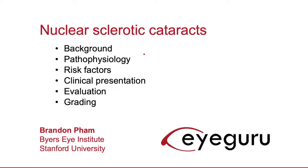In this video we will discuss the most common type of cataract, which is the nuclear sclerotic cataract, sometimes abbreviated as NSC. We'll begin with background information, discuss how they're formed, talk about risk factors, and then conclude with the clinical presentation, evaluation, and grading of nuclear sclerotic cataracts.